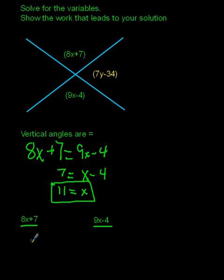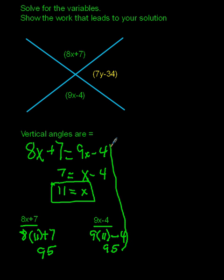So I'll have 8 times 11 plus 7. 8 times 11 is 88 plus 7, I end up with 95. Now on the other side, I've got 9X minus 4, so 9 times 11 is 99 minus 4. So again, I end up with 95. So that tells me that I did my arithmetic correctly. So these angles up in here, both of those have a value of 95 degrees.